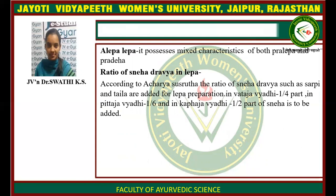Coming to the ratio of Sneha Dravya in Lepa: according to Acharya Sushruta, the ratio of Sneha Dravya such as Sarpi and Taila are added for the Lepa preparation. In Vatika diseases, it should be added in 1/4 part, and in Pittaja diseases, it should be added in 1/6 part.